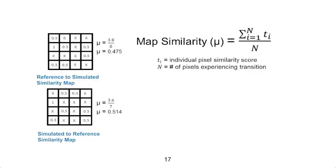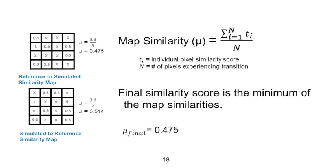This gives a map similarity score of 0.475. The same calculation for the bottom map gives a similarity score of 0.514. To get the final similarity score, Dynamica takes the minimum of the two map similarity scores. In this example, the minimum score is 0.475.